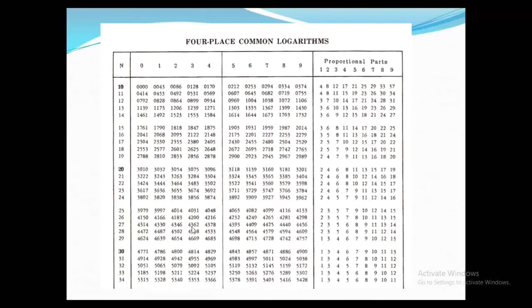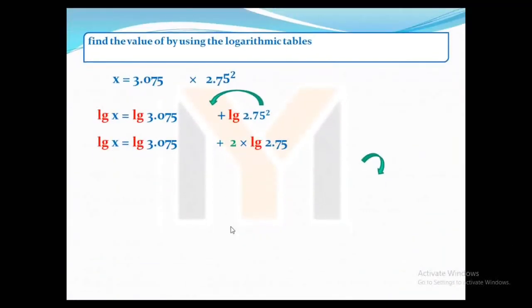Now 0 point, we'll find the logarithm of that 275. Where is that 275? So 27th row and fifth one is 4393. So the answer is 4393. You can see that we have marked that 4393.